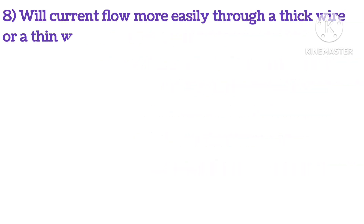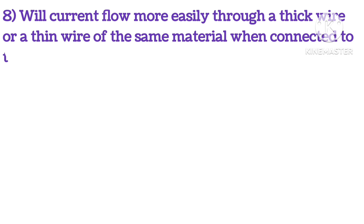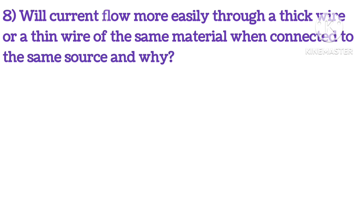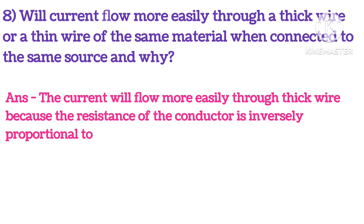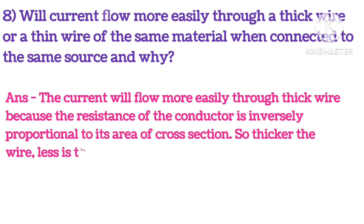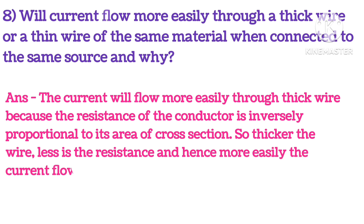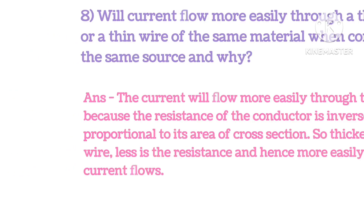Will current flow more easily through a thick wire or thin wire of the same material when connected to the same source? Current will flow more easily through a thick wire because the resistance of a conductor is inversely proportional to its area of cross-section. So the thicker the wire, the less will be the resistance, and hence current flows more easily.